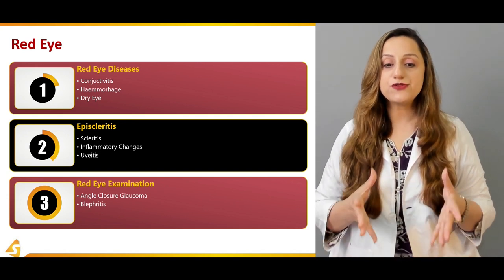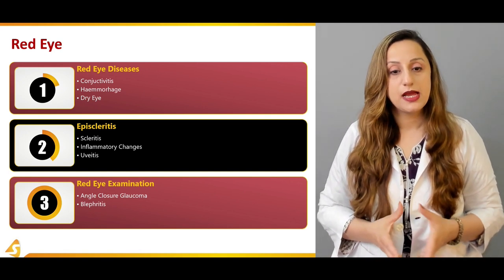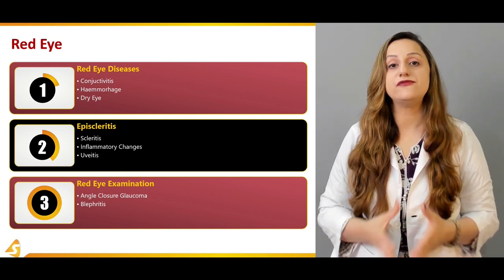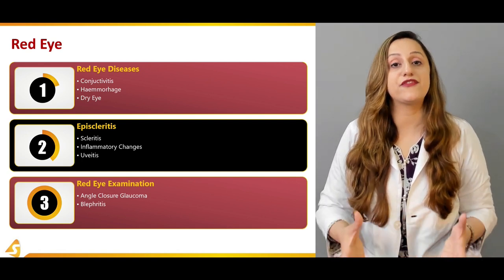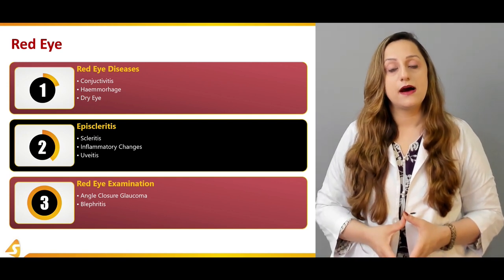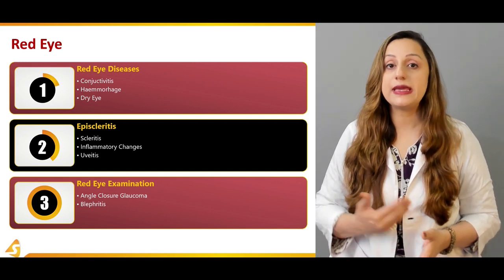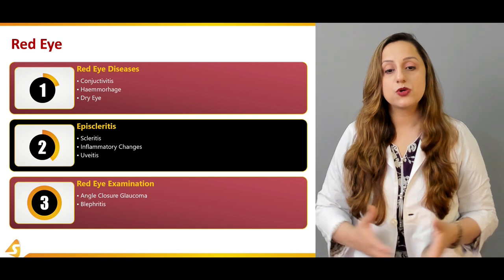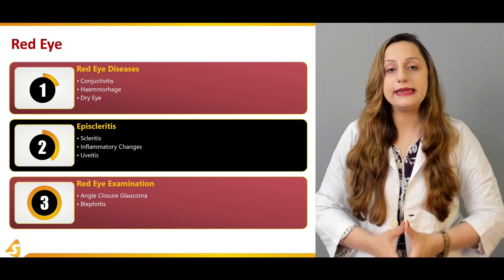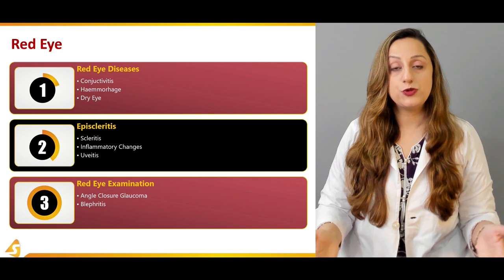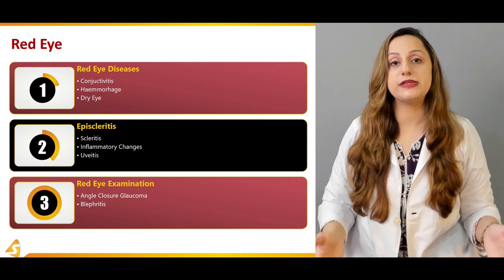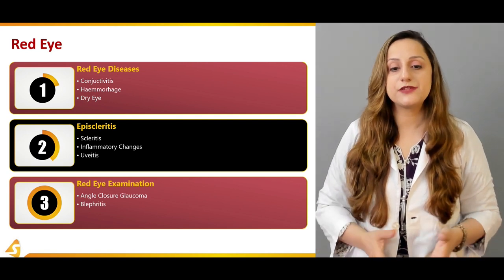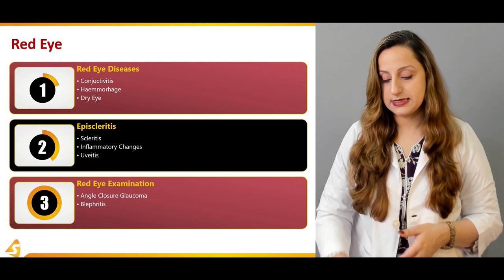We also have other inflammatory eye conditions: keratitis, uveitis, and blepharitis. The names of these conditions indicate infections or inflammations of those particular structures in the eye. One should be well-versed with the signs and symptomatology of all these conditions and know the respective treatment modalities.